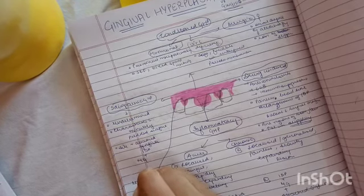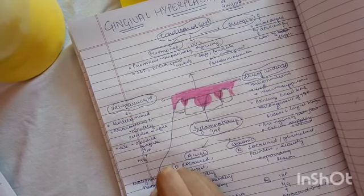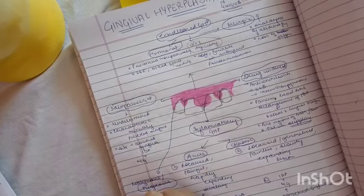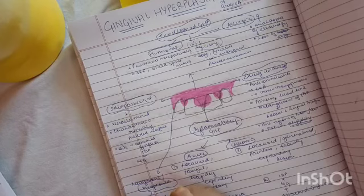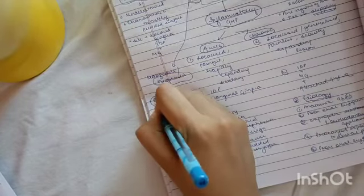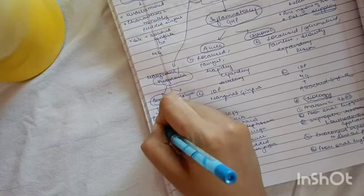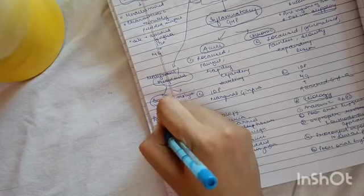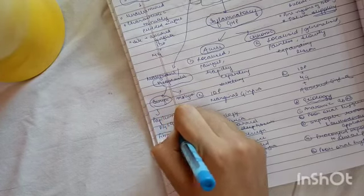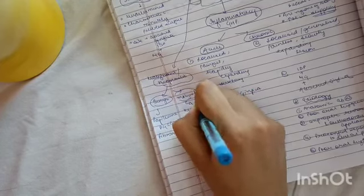Gingival hyperplasia can also be due to neoplastic changes. In neoplasms, you have benign and malignant types. Benign neoplasms include papilloma, peripheral giant cell granuloma, and fibroma. Malignant neoplasms include carcinoma and malignant melanoma.